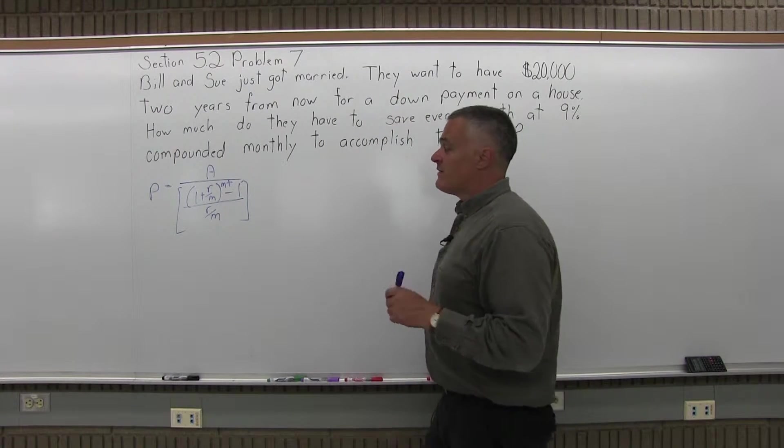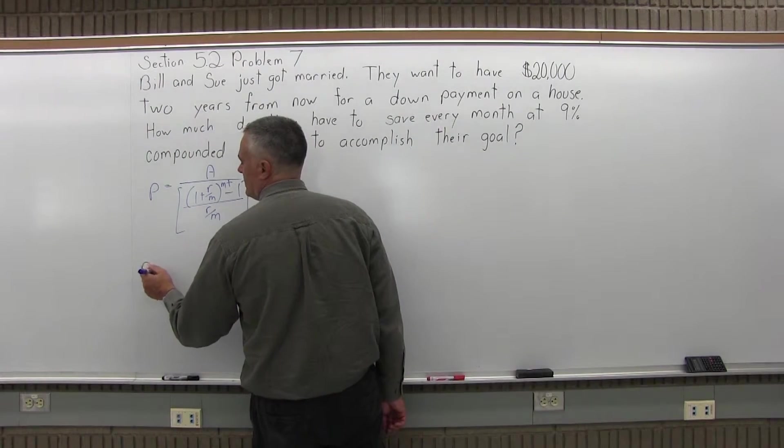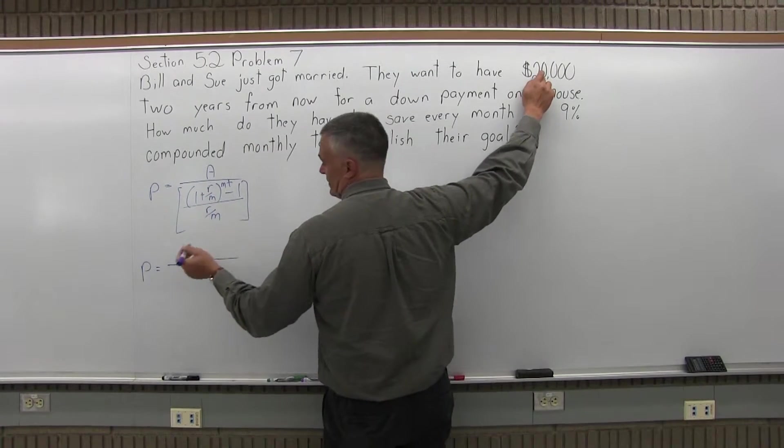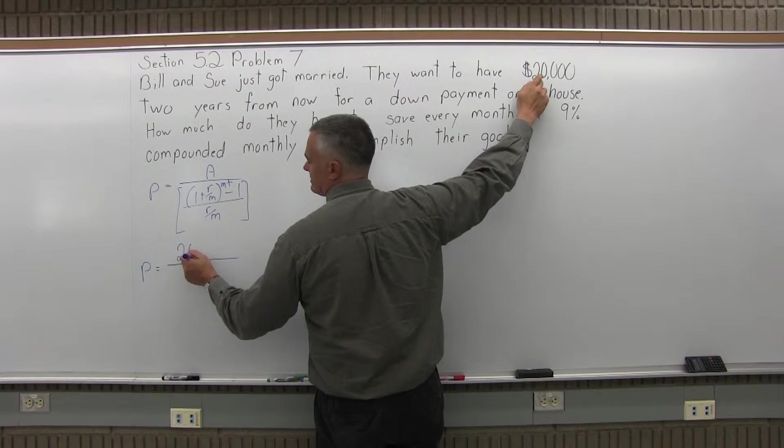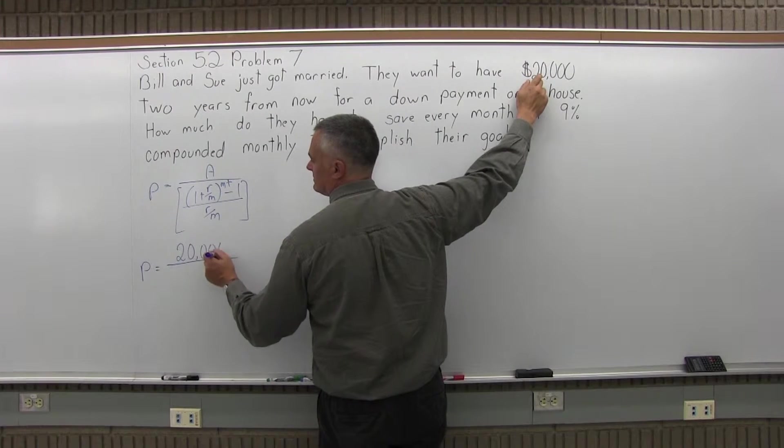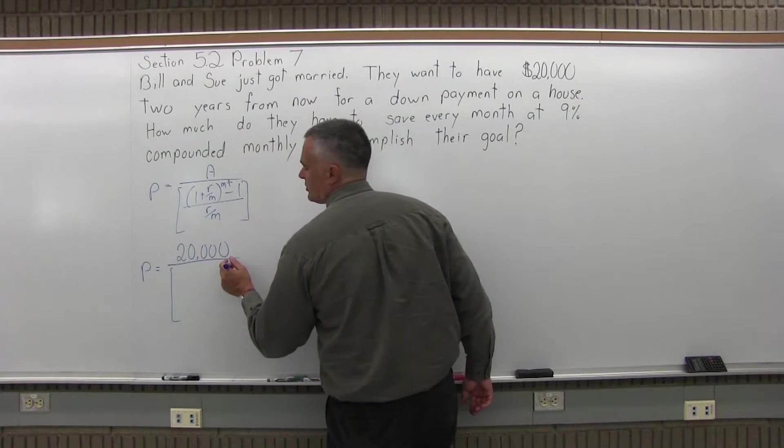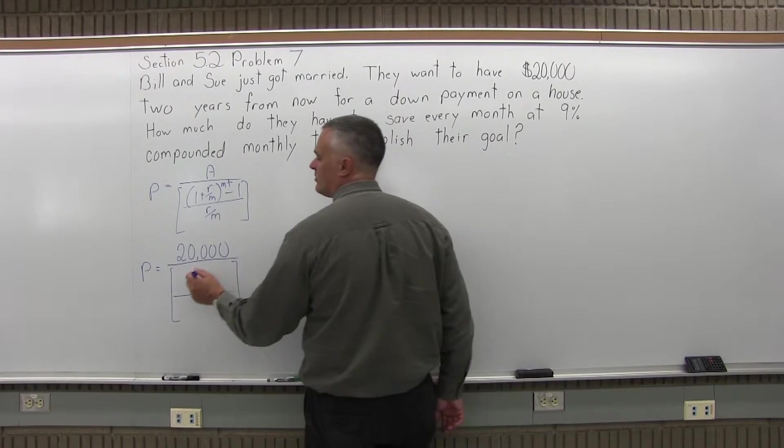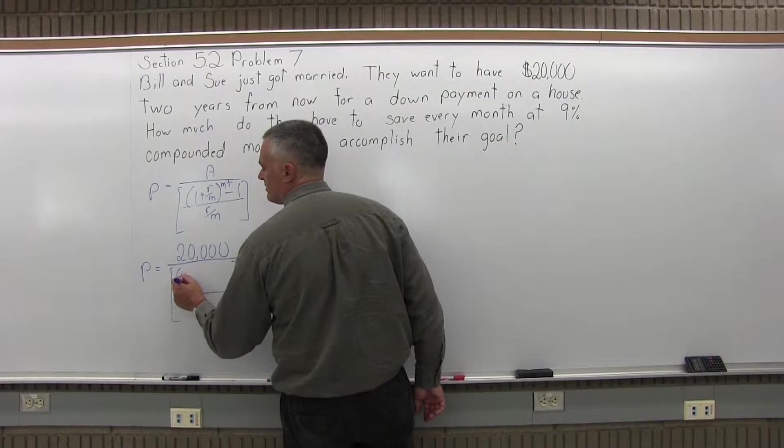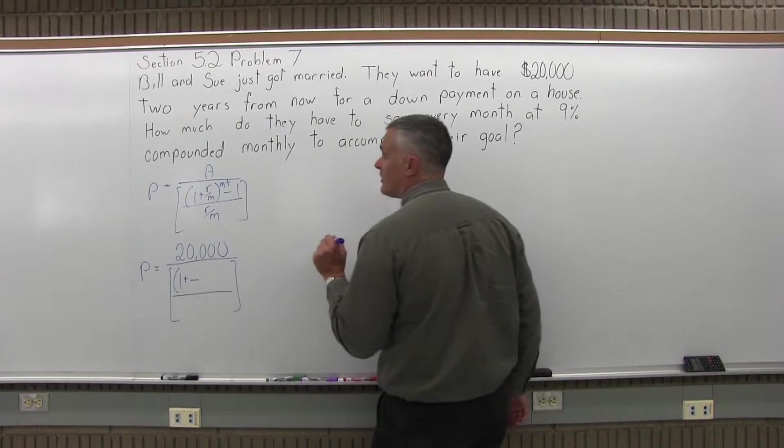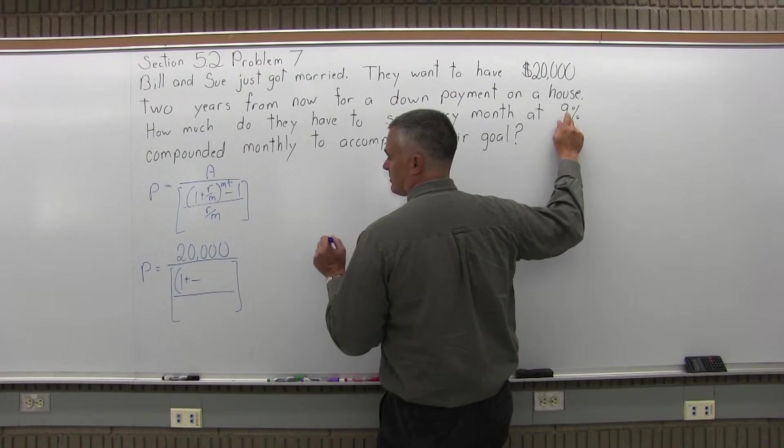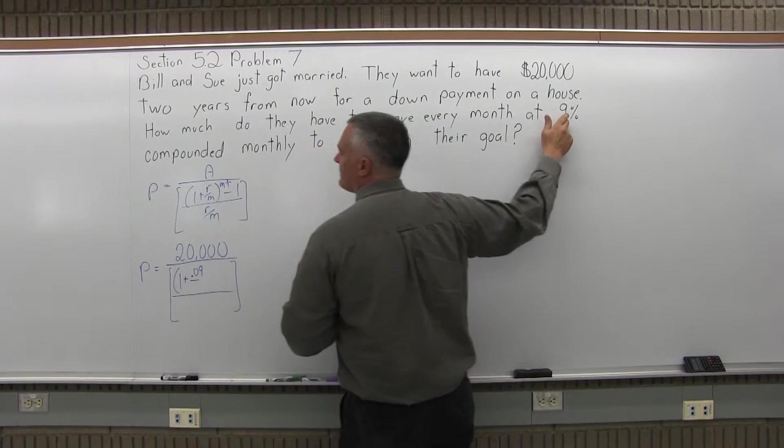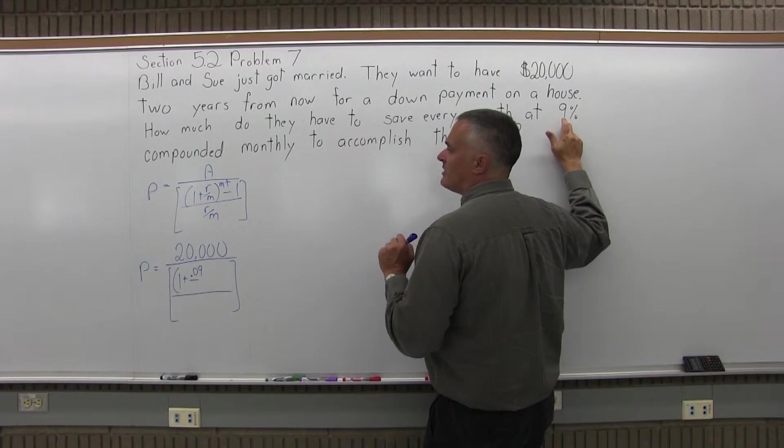And we start filling it in. So, P equals A is the amount at the end, the goal, so for this problem $20,000. And under the $20,000 we have some brackets with a numerator and a denominator and the numerator, 1 plus R over M is 1 plus, the R is the rate as a decimal and for this problem it's 9%. So, as a decimal, 9% is .09.